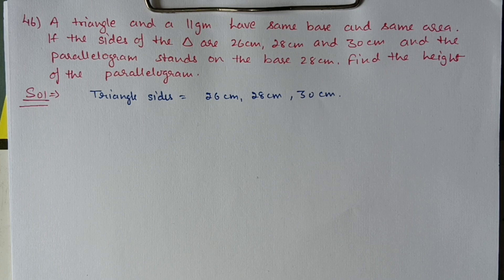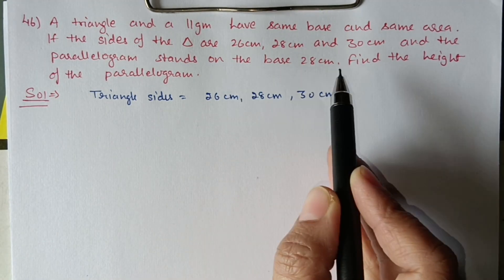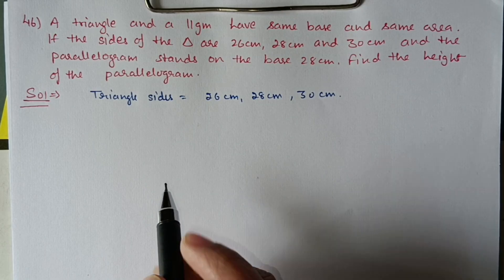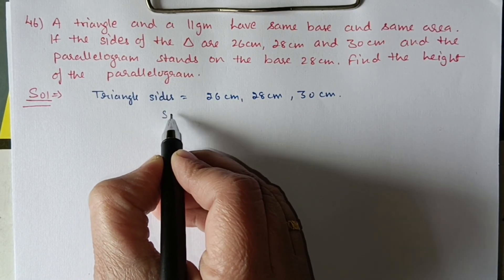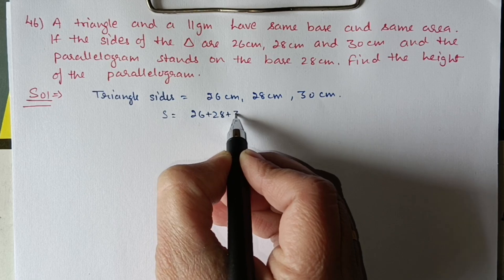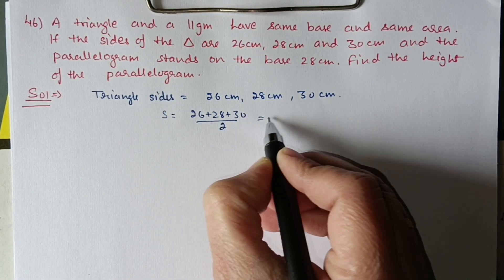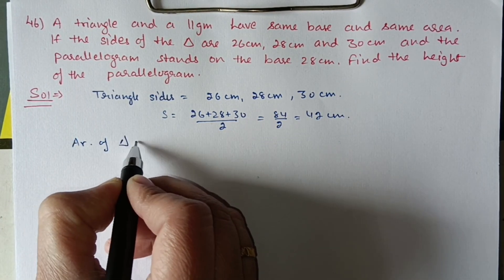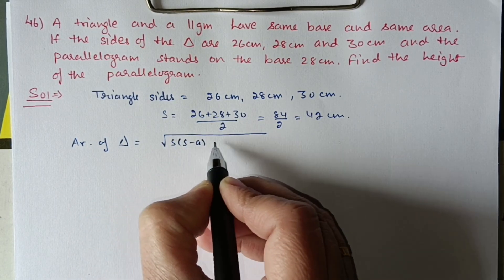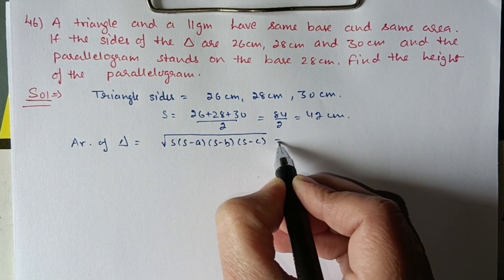Next, question number 46. A triangle and a parallelogram have the same base and same area. The sides of the triangle are 26, 28, and 30 cm, and the parallelogram stands on base 28 cm. Find the height of the parallelogram. First, find the area of the triangle using Heron's formula. s = (26 + 28 + 30)/2 = 84/2 = 42 cm.